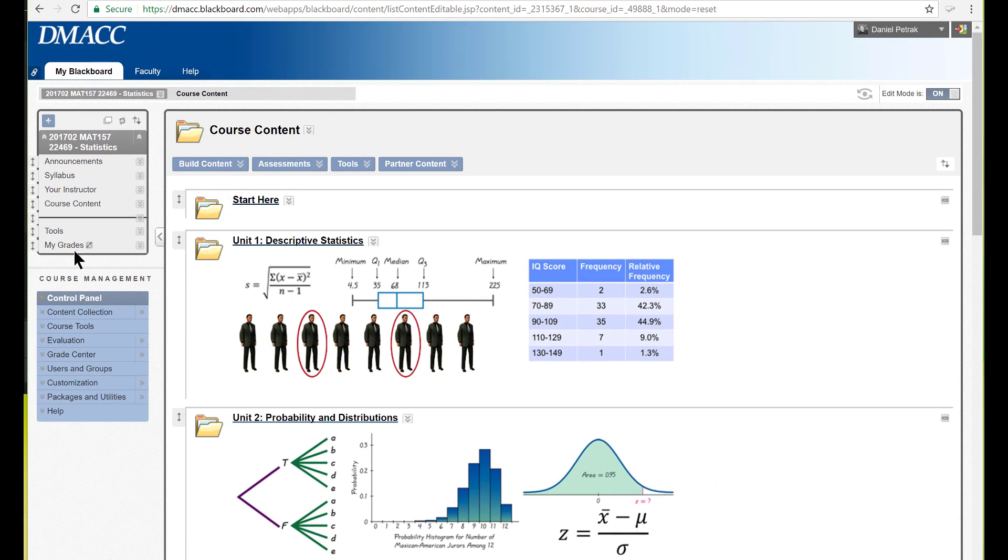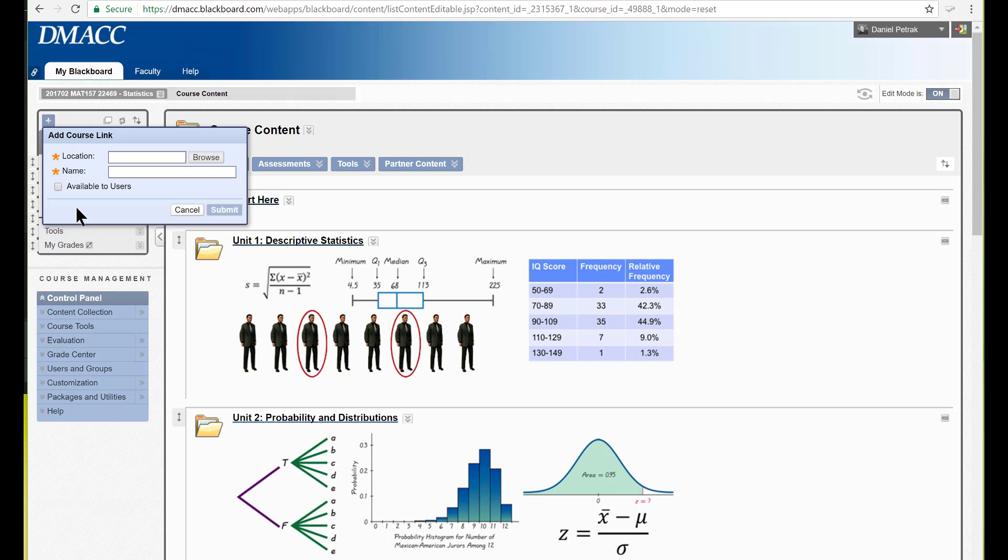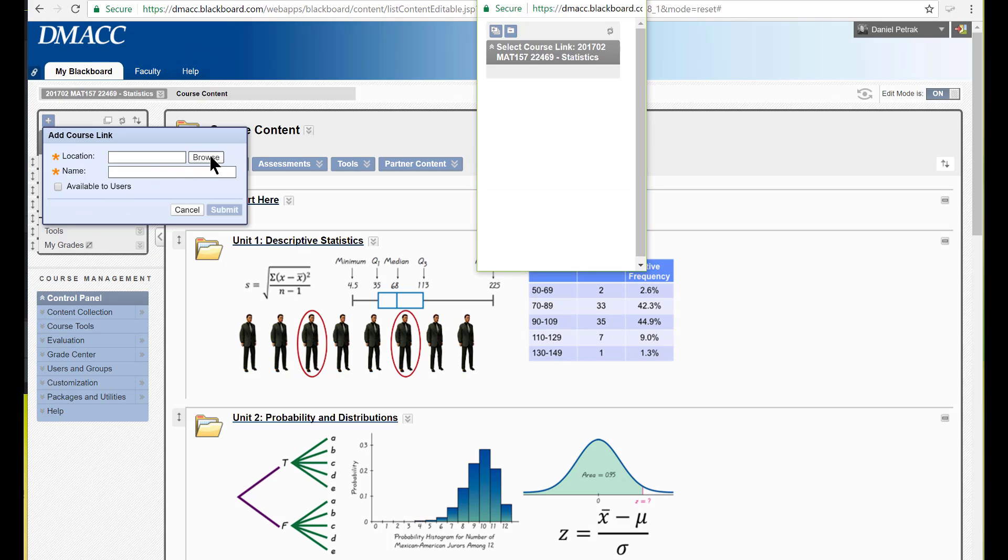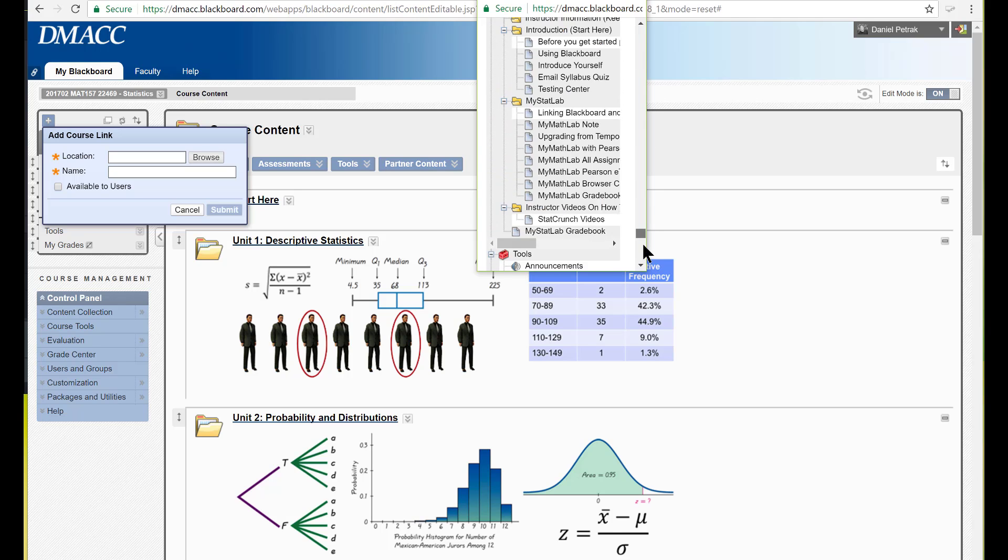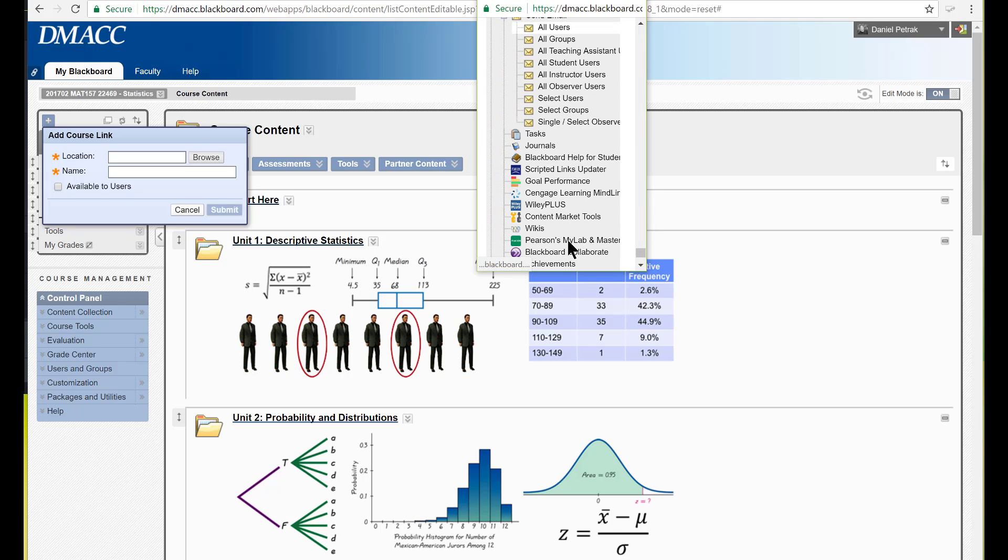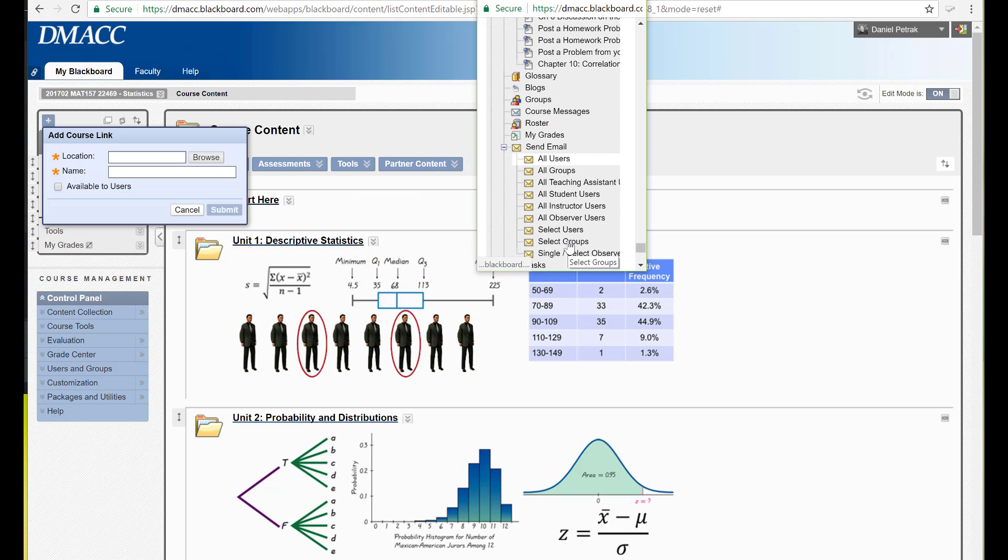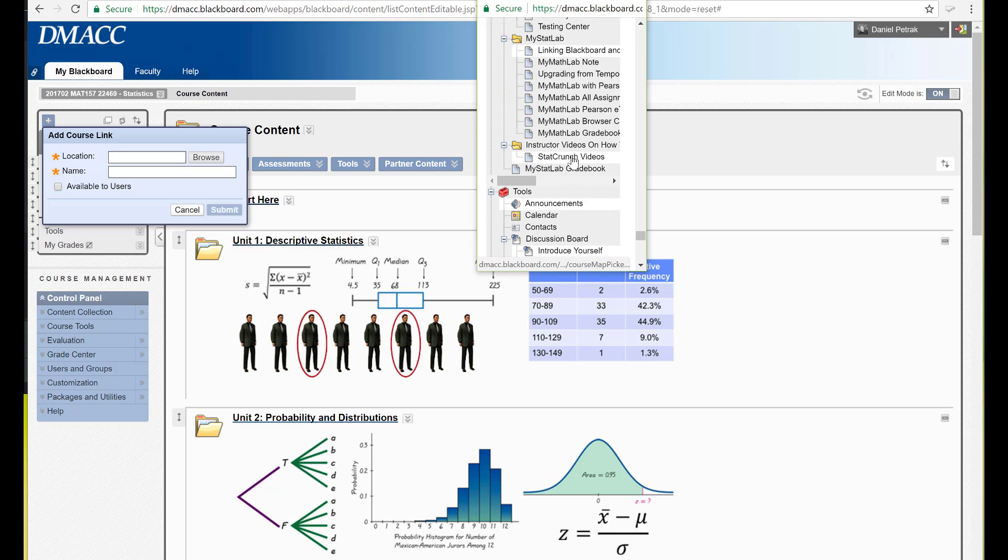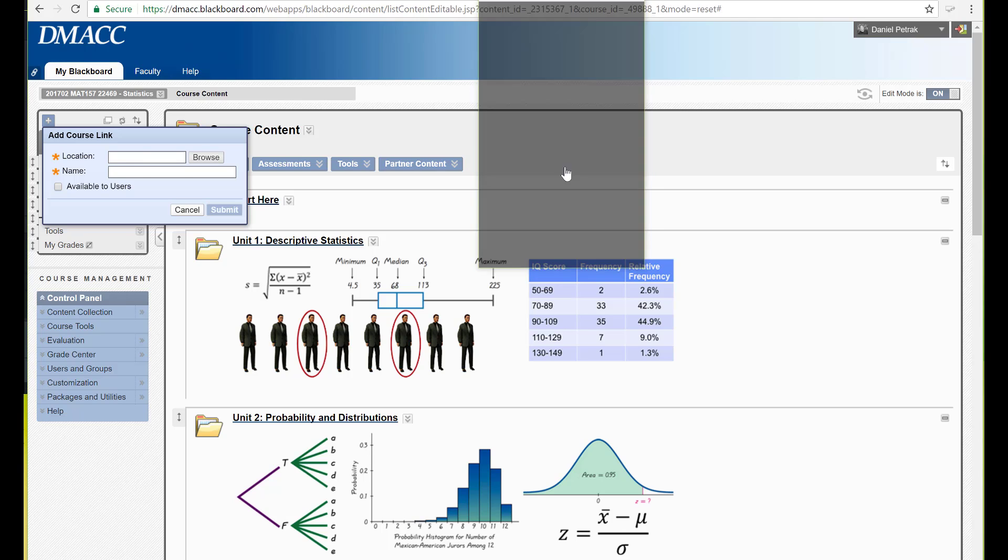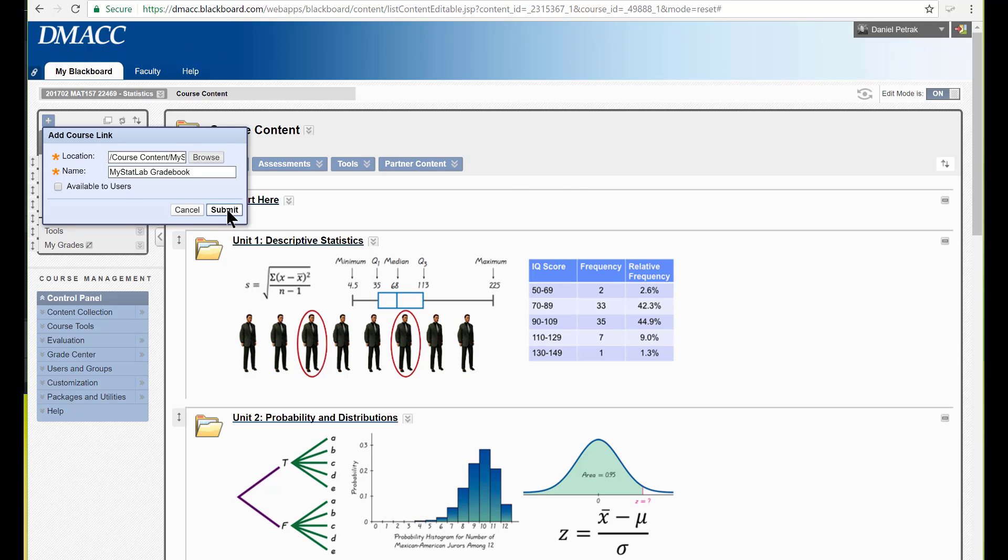And now if I want to get it over here in this left hand menu, I set the plus sign and hit Course Link, Browse. And I go to the very bottom of my content and I should see the gradebook here, hopefully right there, My Stat Lab Gradebook. So I just click that and I hit Submit.